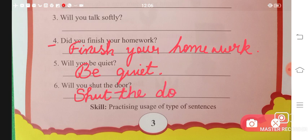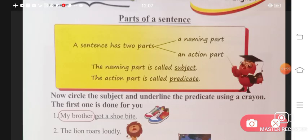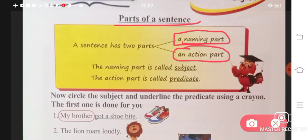Now a sentence has two parts. One is a naming part - what we're talking about. And second is an action part - what we're saying about it. In a sentence, what we're talking about is your subject, and what we're saying about it, or the remaining part, is your predicate.